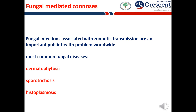Fungal infections associated with zoonotic or sapronotic transmission are an important public health problem worldwide. A number of these infections are among the most common fungal diseases, including dermatophytosis, sporotrichosis and histoplasmosis. It is notable that some fungal diseases with zoonotic potential have lacked adequate attention in international public health efforts, leading to insufficient focus on their preventive strategies. In this talk, we will discuss an overview of neglected fungal pathogens that could be carried and transmitted between vertebrate animals and people.